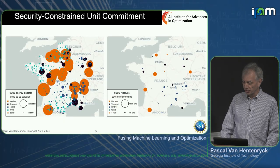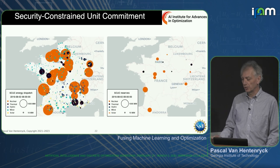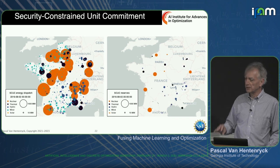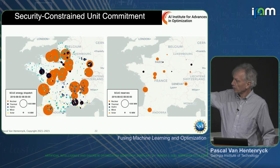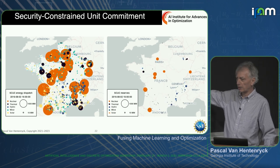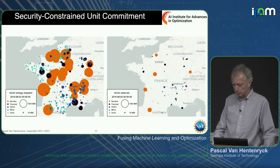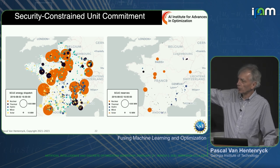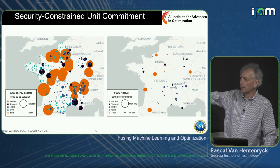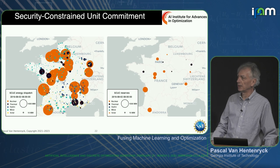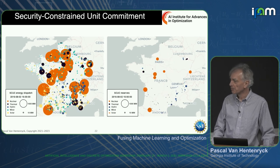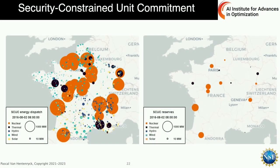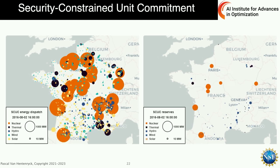I'll show the MISO pipeline replicated on the French system, since I can't show MISO data due to U.S. controlled information restrictions. On the left is the energy dispatch — the big generators are nuclear, there are also coal/gas generators in black, solar in yellow, and wind in purple. On the right is the reserve. You can see that commitments are changing every hour — this is a very dynamic system that moves all the time.